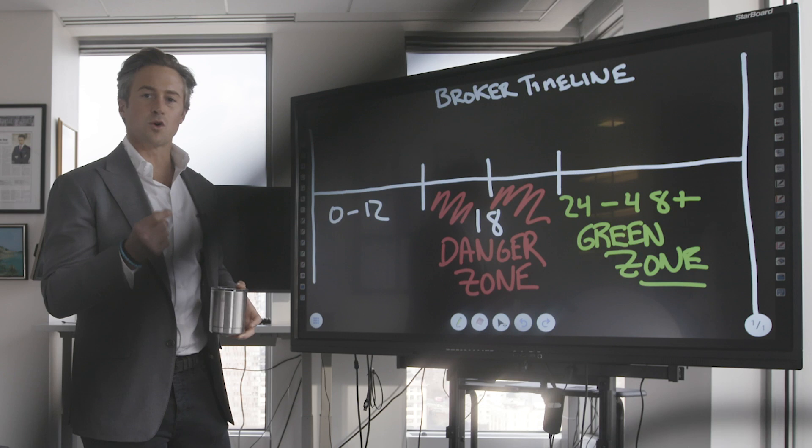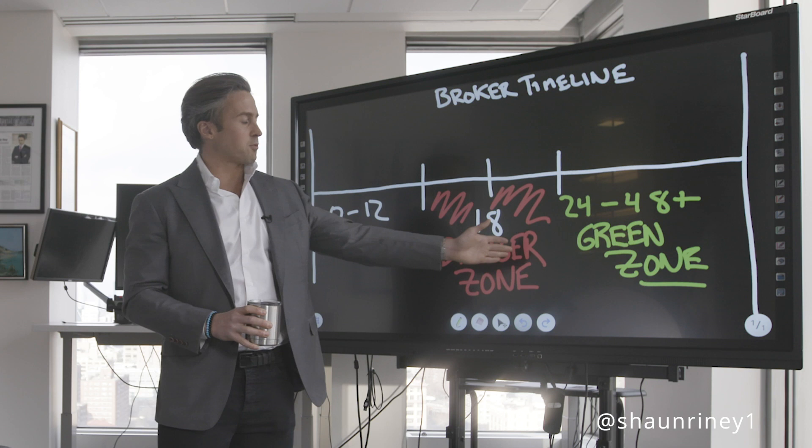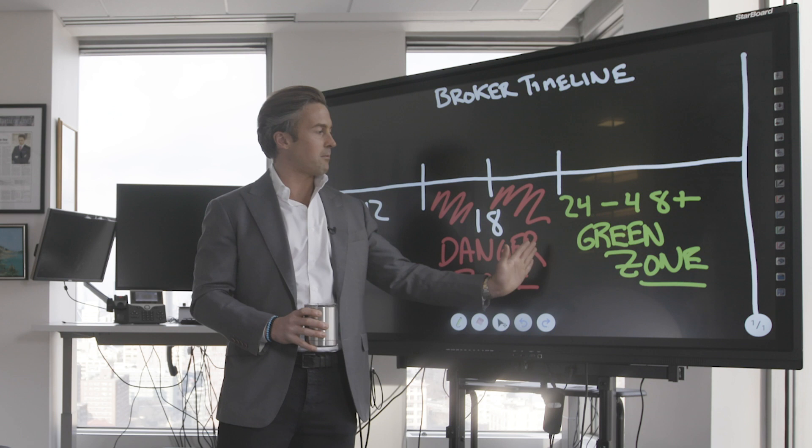I'll repeat that: a business plan that's designed for success works under the worst case circumstances. Look, there's plenty of examples where people make money in this time period, but again under the worst case scenario, you're not going to make any money until month 24 to 48.